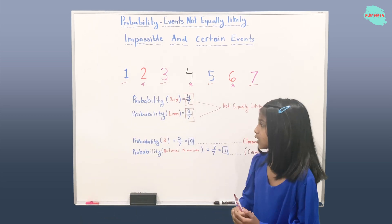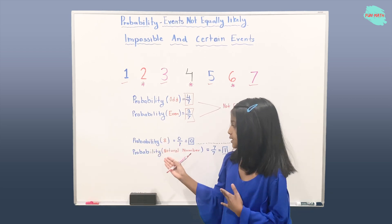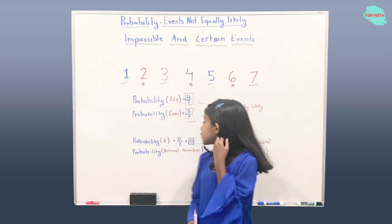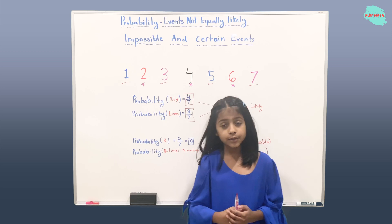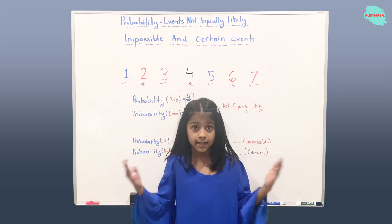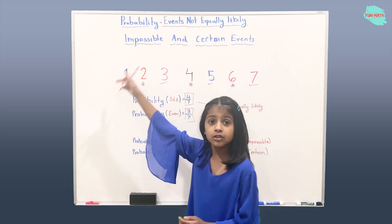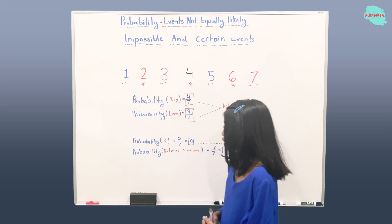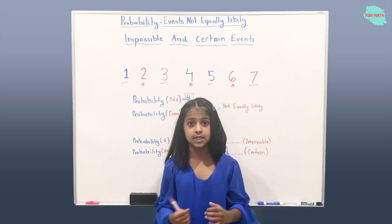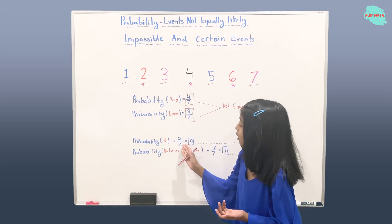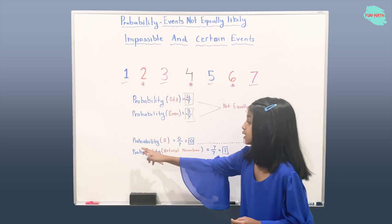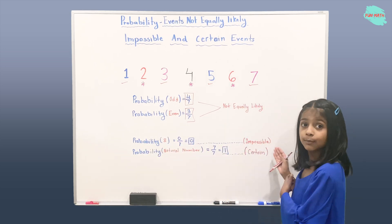So now let's talk about the probability of getting eight, which is zero over seven. How did we get zero over seven? We got zero as our numerator because there is no eight in this set — it's only one through seven. So that's why we have zero as our numerator. We have seven as our denominator because that's the total possibilities. Zero over seven is just zero, and the probability of getting eight is an impossible event.